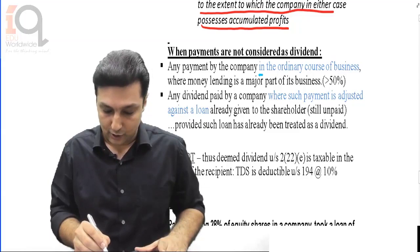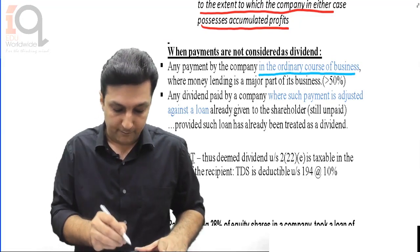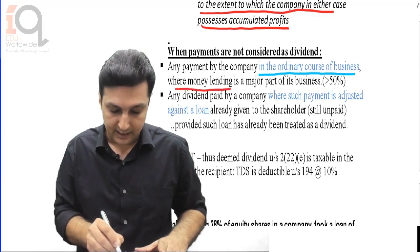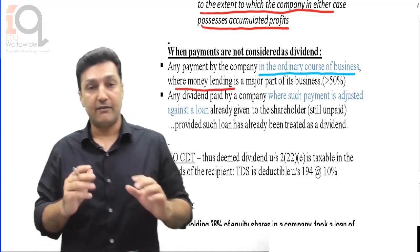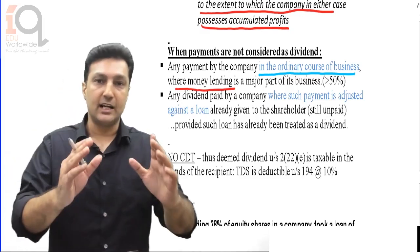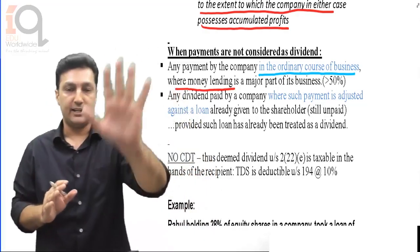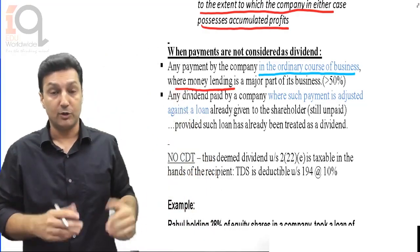However, if the loan given is in the ordinary course of business of money lending - that is, the private limited company is in the money lending business and has given the loan in its normal course of business - then clause E will not apply, because then of course it is the money lending business.